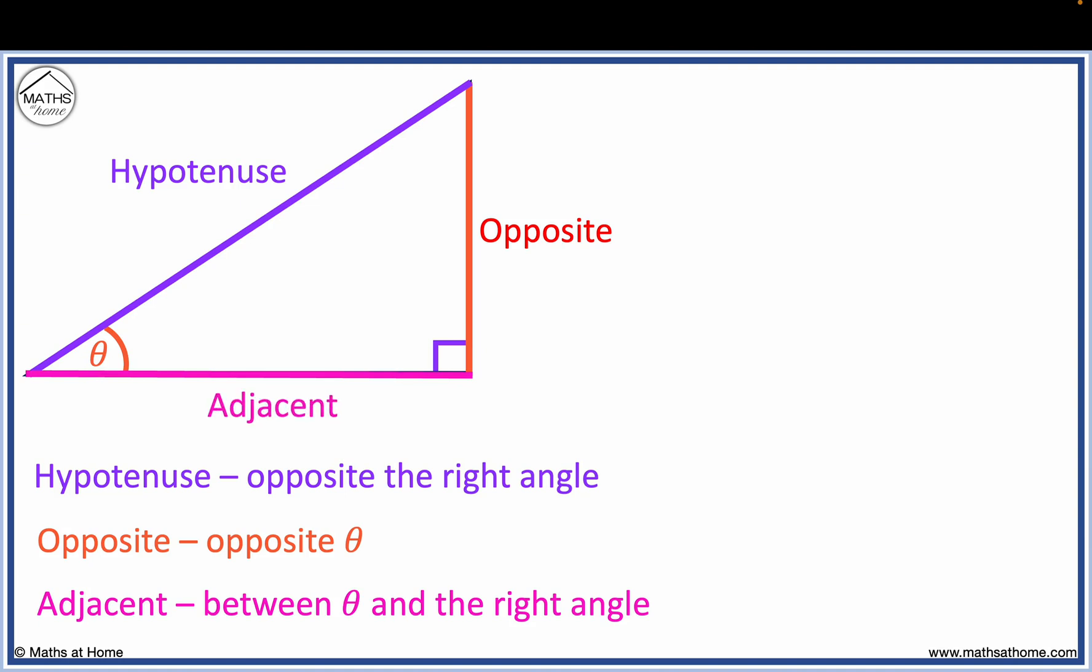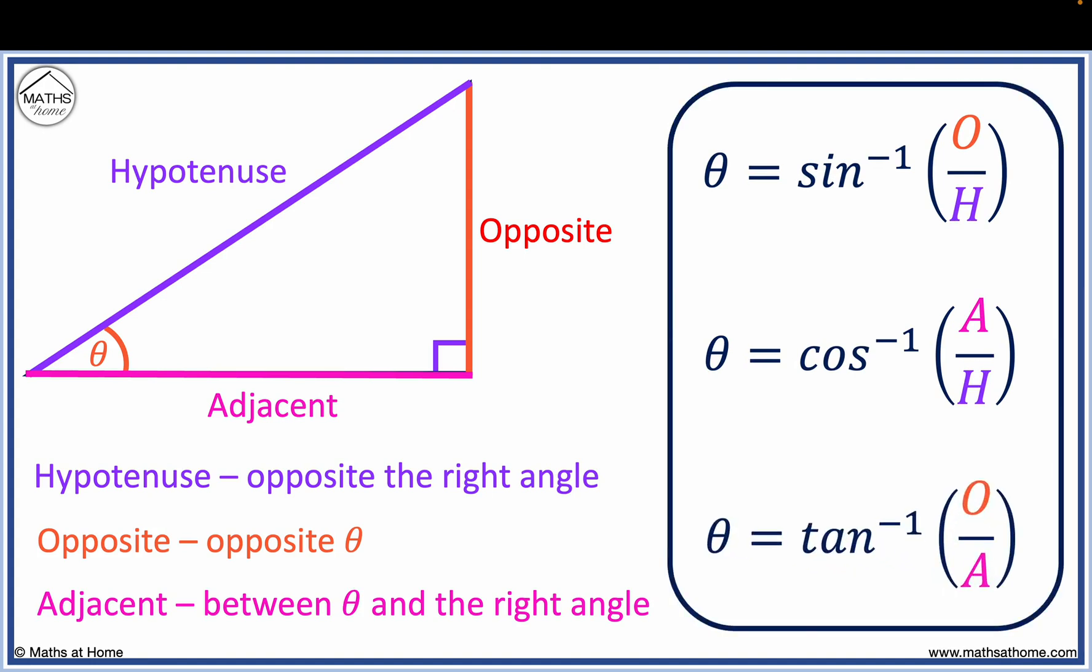Once we have labelled the sides, we simply calculate the missing angle theta by selecting one of these three equations. The equation we use depends on which sides we know.